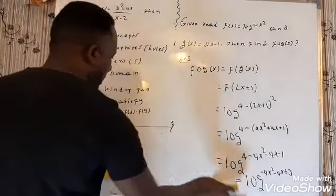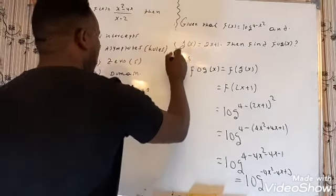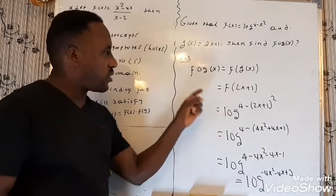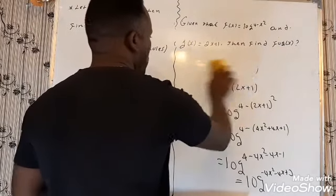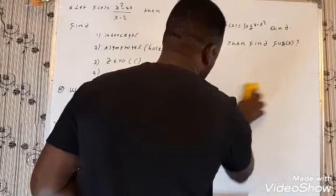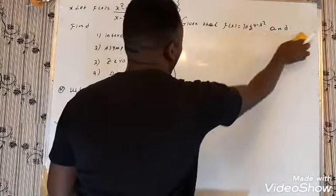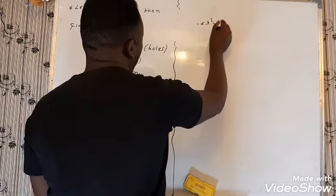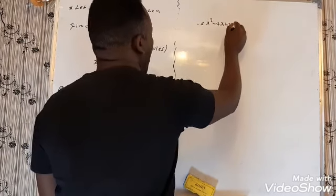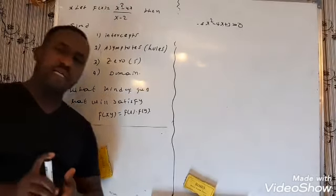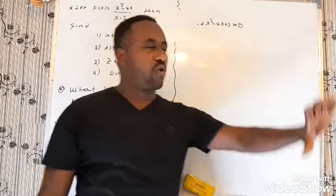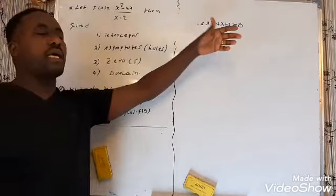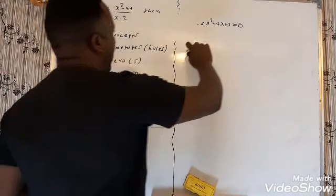Now what will be the domain for this problem? How are we going to find the domain? The domain of a logarithmic function — since this is a composition function — it is better to find the domain of the whole thing. In order to find the domain, the argument minus 4x² minus 4x plus 3 must be greater than zero, because the logarithmic domain is always strictly above zero.